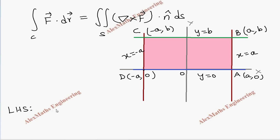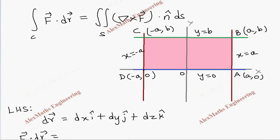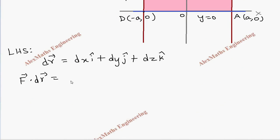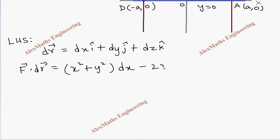For the left-hand side of Stokes' theorem we need F·dr. The vector dr = dx î + dy ĵ + dz k̂. When we compute F·dr, the i-component of F is (x² + y²), giving (x² + y²)dx, and the j-component is −2xy, giving −2xy dy. There is no k-component.